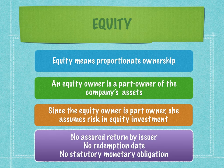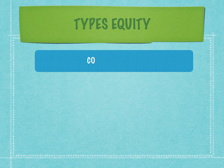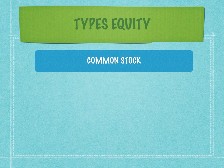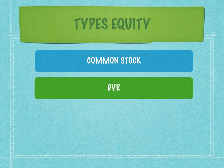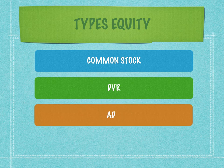Equity has no redemption date and no statutory monetary obligation. There are a few non-monetary obligations applicable to equity issuers, which is why common stock is different from stock with differential voting rights. The equity types are of three categories: the first is common stock, the most familiar, with almost 98 percent of all listed stocks on the National Stock Exchange being common stock. The second is DVR — differential voting rights — and the third type is ADR, American Depository Receipts.